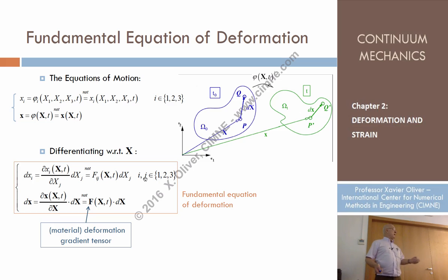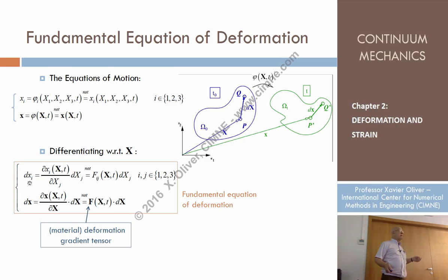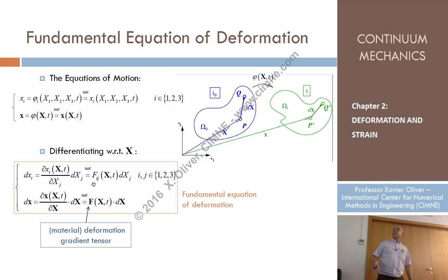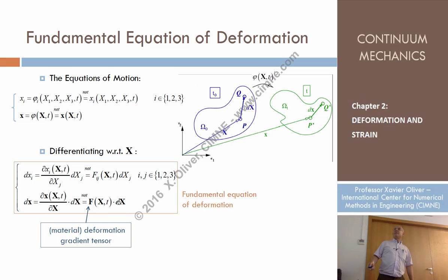From the indicial expression we can extract a compact expression. The component i of a vector — what is the vector whose component i is differential of xi? It is differential of vector x. What is the vector whose component j is differential of XJ? It is differential of X. And this can be identified as the components of a tensor F, a second-order tensor with two indices, times differential of X.